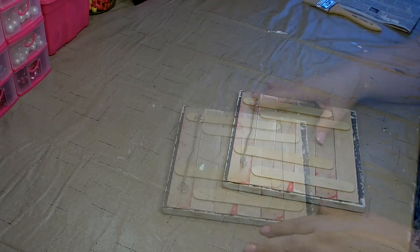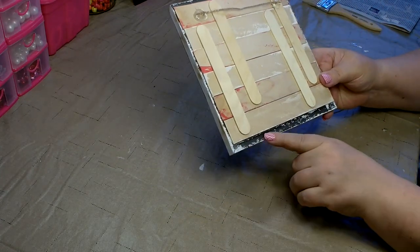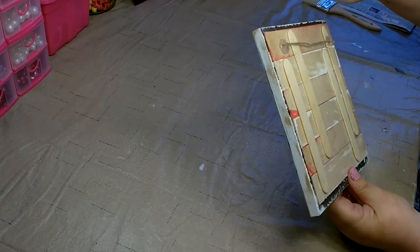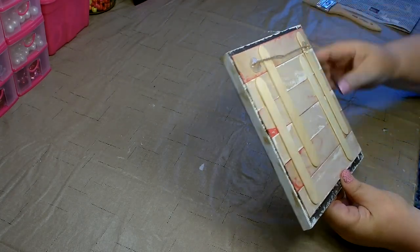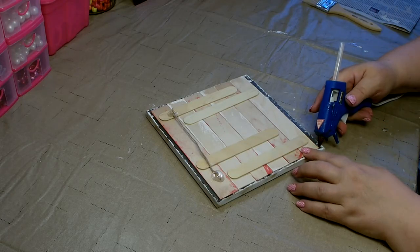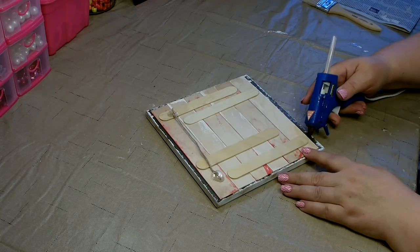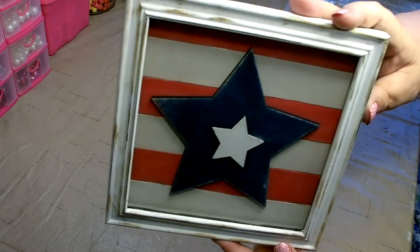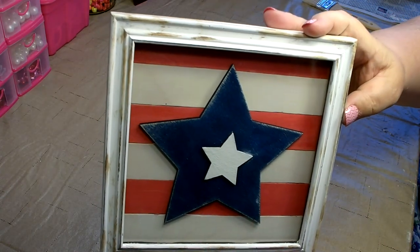For some extra security, you'll want to run a bead of hot glue across the bottom and the top. And we're all done with our rustic stars and stripes.